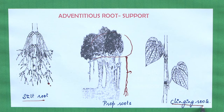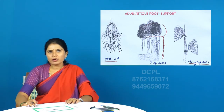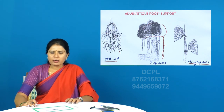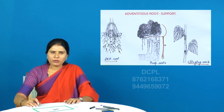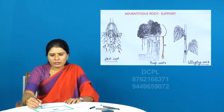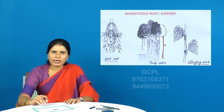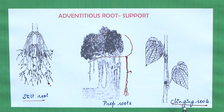Another type of root aiding in mechanical support is clinging roots, usually found in weak stem plants like Pothos or betel. These weak stem plants develop small root-like structures from the nodal region that help in the firm fixation of the weak stem plant to another erect plant body. Such clinging roots are seen in Pothos or betel.